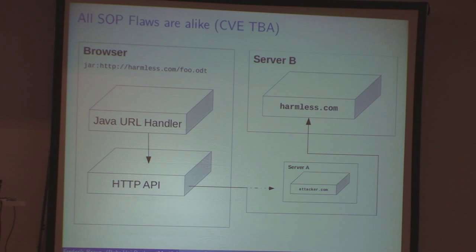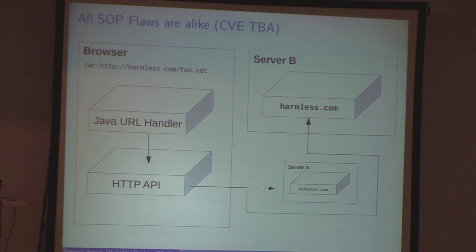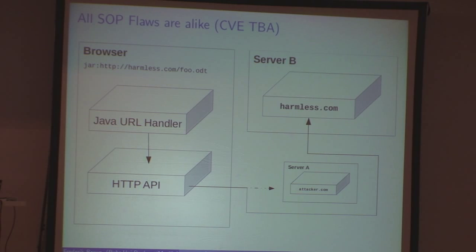I found something similar in Java — I don't know the CVE ID yet but it's already fixed. You could change the jar: protocol, which is used to read jar files (Java archives) from other domains. Java really didn't have any SOP code for the jar: protocol. The jar specification says a Java archive is a zip file with optionally a manifest file, which means I could read any kind of zip file from any other domain just by prepending jar: to the URL.